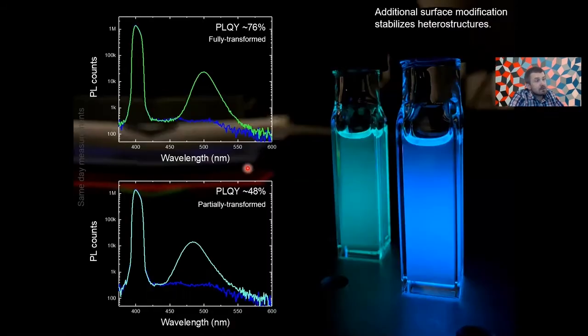So next, I mentioned that this interconversion sort of proceeds over several minutes. So heterostructures are transient. So since we published this first paper, we made some advances and introduced additional surface modification that allowed us to obtain samples of heterostructures that seem to be stable for at least a few days. And it's shown here.